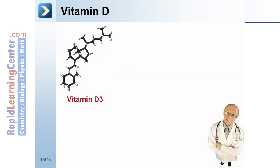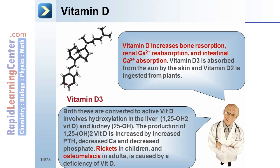Vitamin D increases bone resorption, renal calcium reabsorption, and intestinal calcium absorption. Vitamin D3 is absorbed from the sun by the skin, and vitamin D2 is ingested from plants. Both are converted to active vitamin D through hydroxylation in the liver and kidney. The production of 1,25-(OH)2 vitamin D is increased with increased parathyroid hormone, decreased calcium, and decreased phosphate.